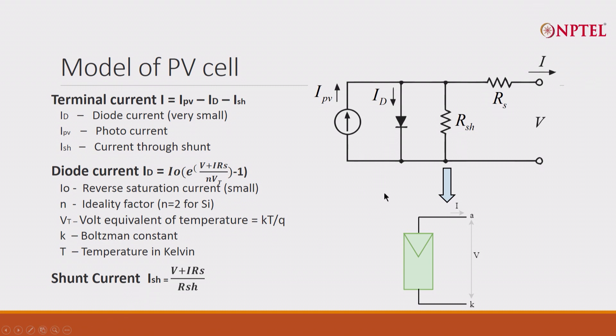And this is the current flowing in the external circuit. And shunt current, this current is V plus IRS, because this is the current flowing, V plus IRS divided by RSH.